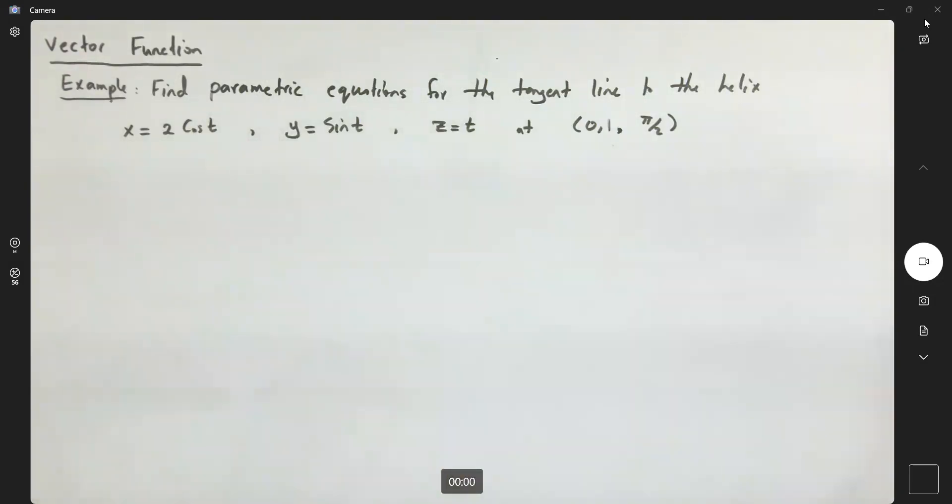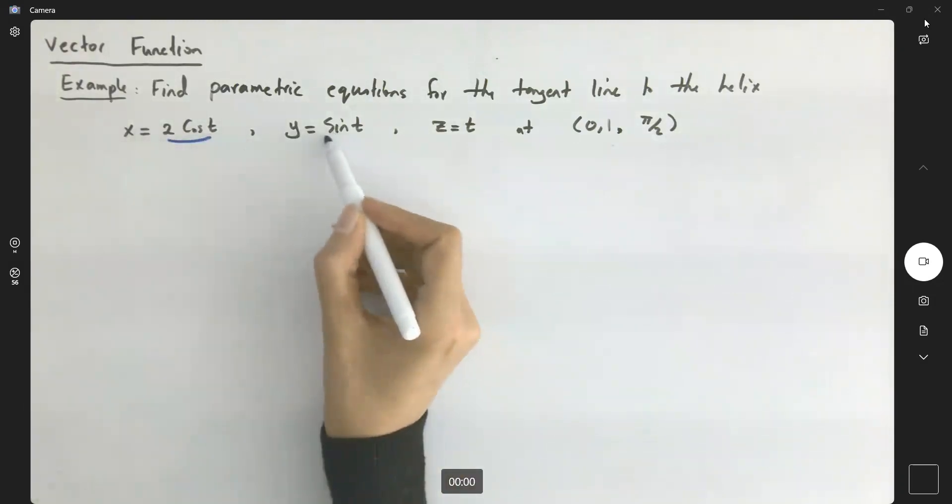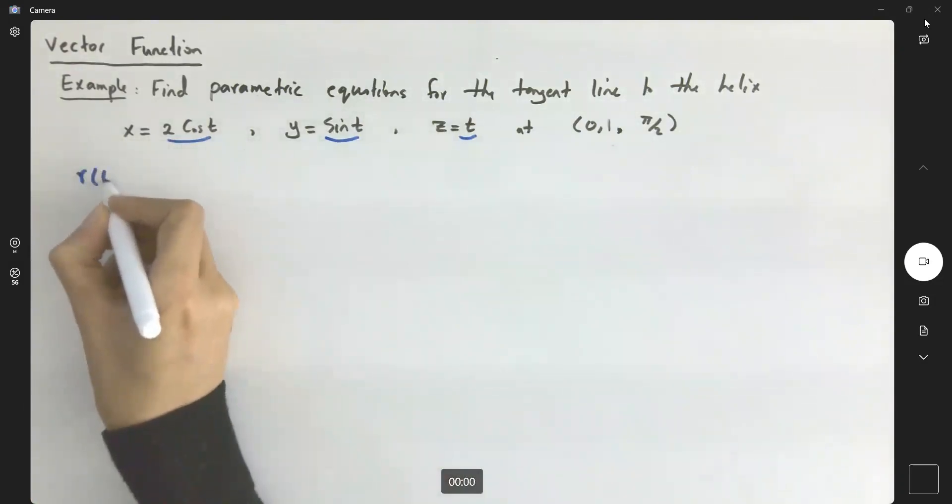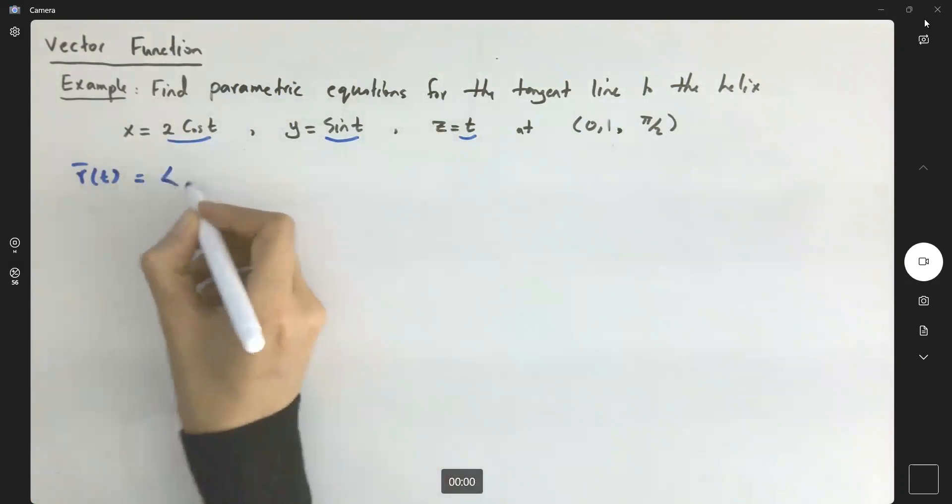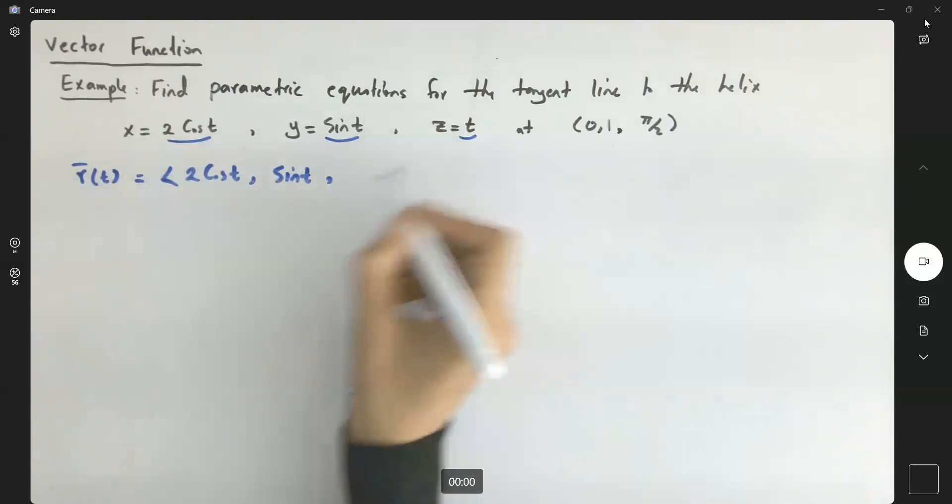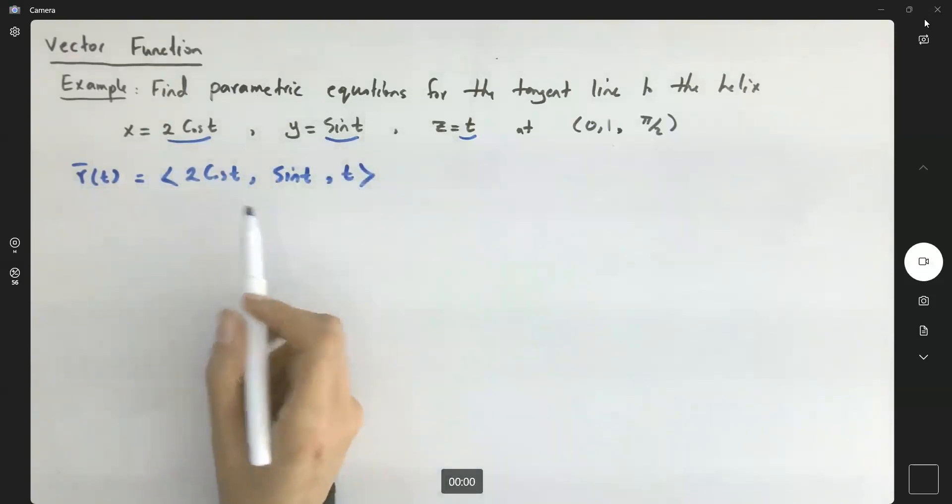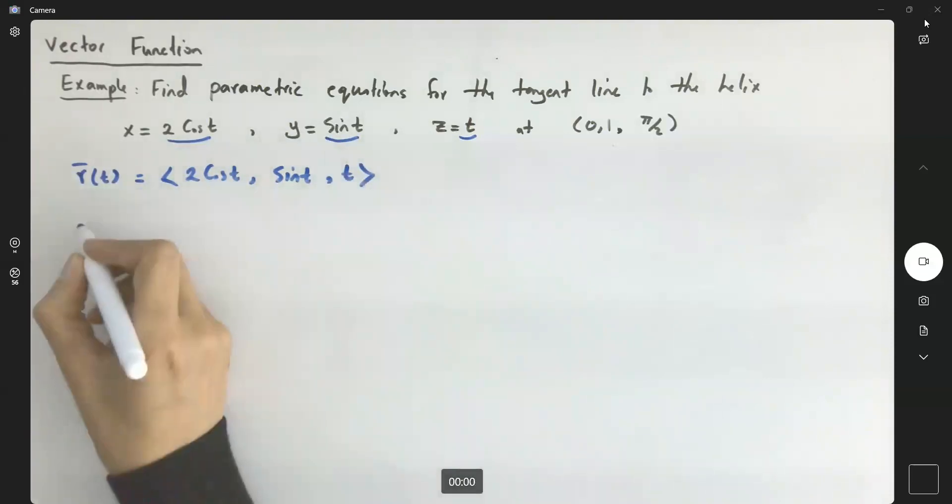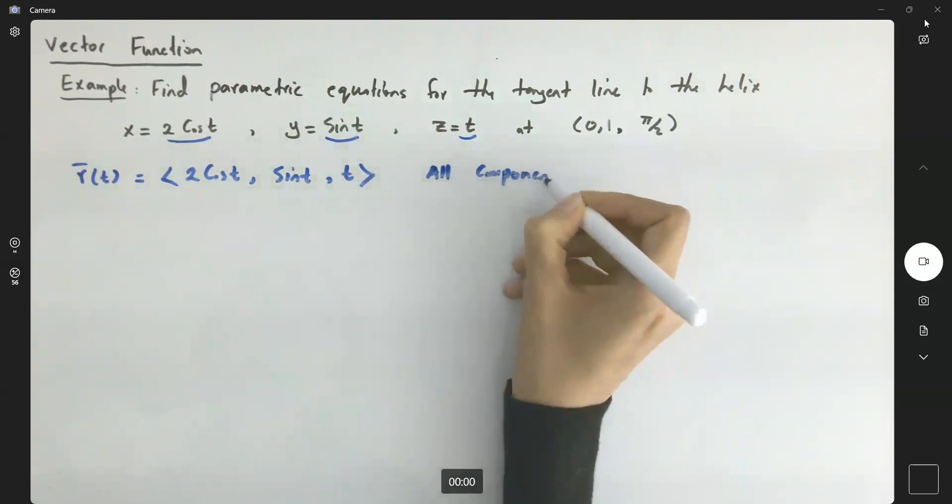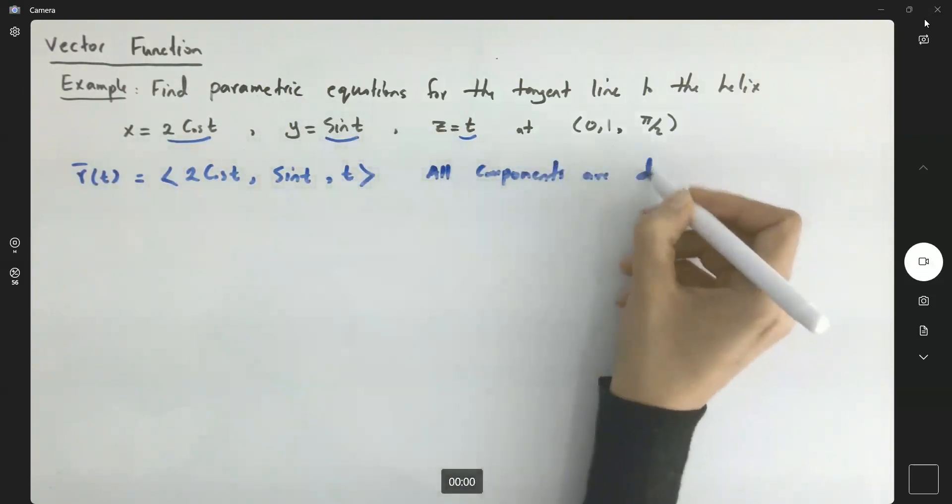The very first thing we need to do is to find the derivative of our helix. Note that these functions are all differentiable. R(t) can be written as 2 cosine t, sine t, and t. At different t values, you get different positions. All components are differentiable.